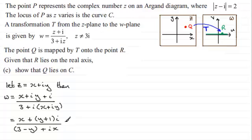Now I need to split this up into real and imaginary parts. So in order to do that now, I need to multiply top and bottom by the complex conjugate of the denominator here. In other words, multiply the top and bottom by 3 minus Y minus iX. So the bottom here is also multiplied by 3 minus Y minus iX.